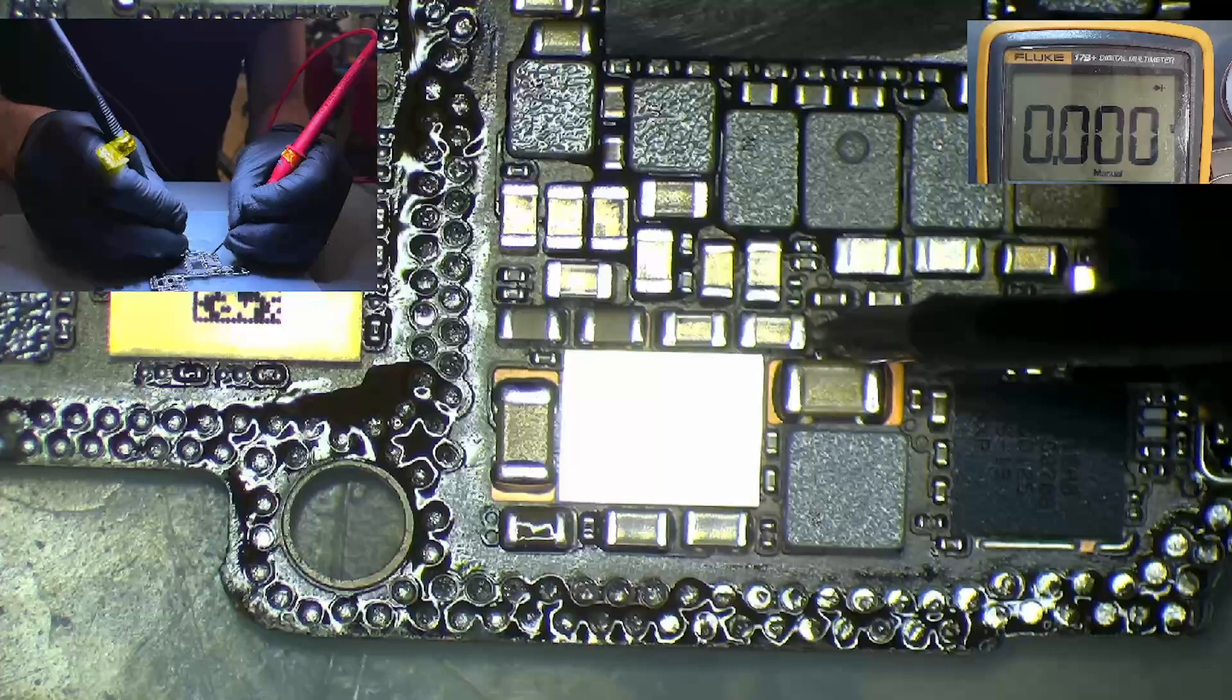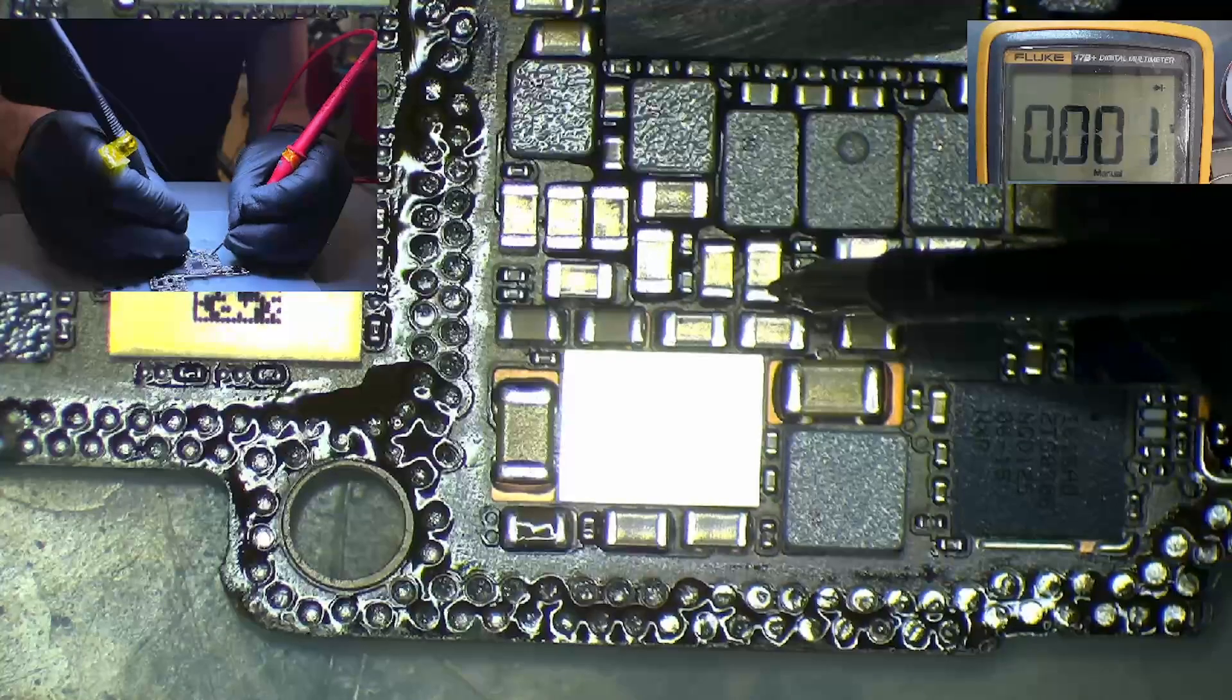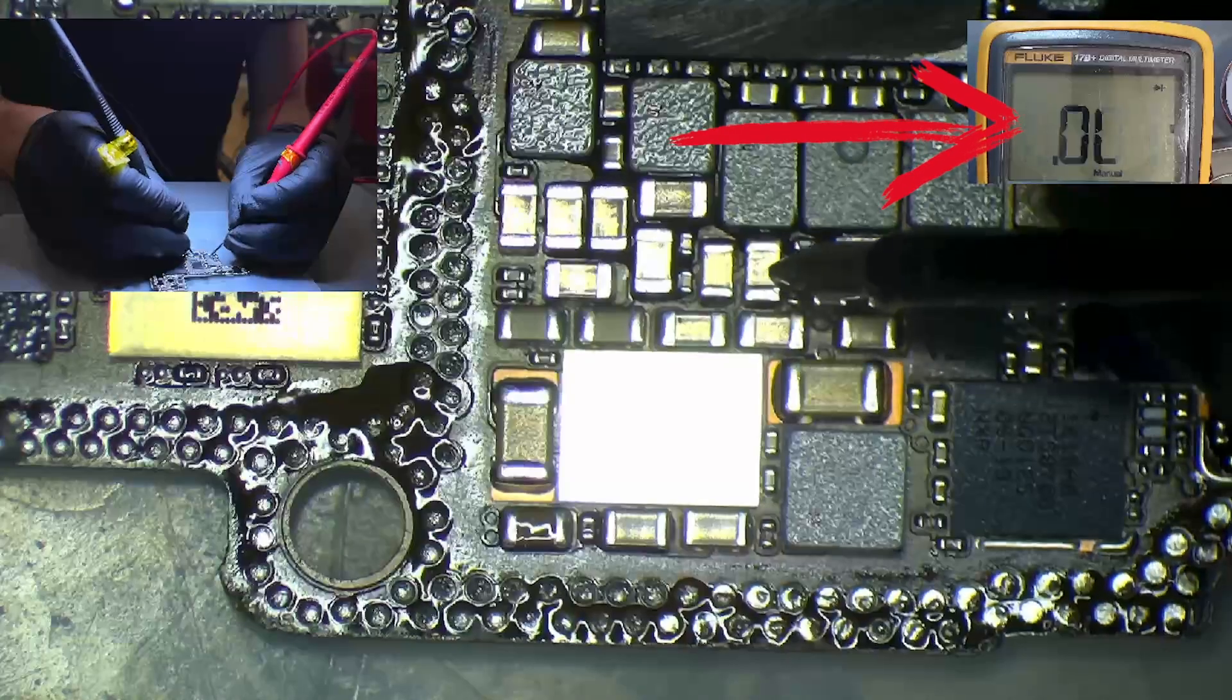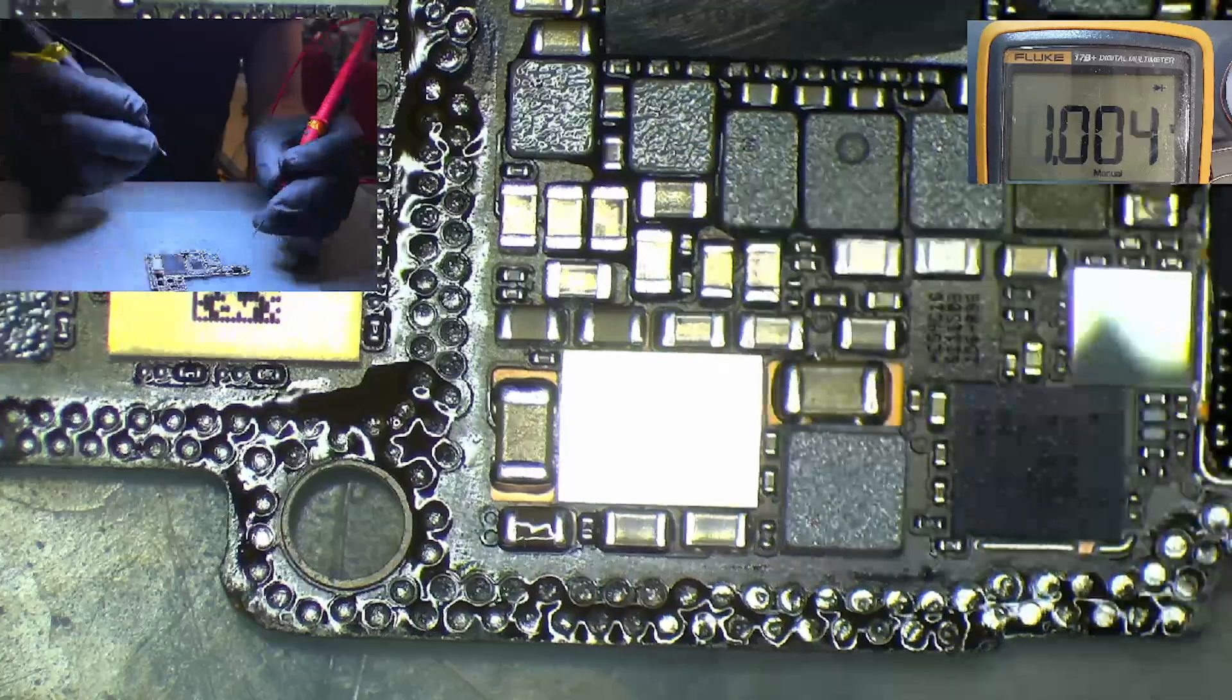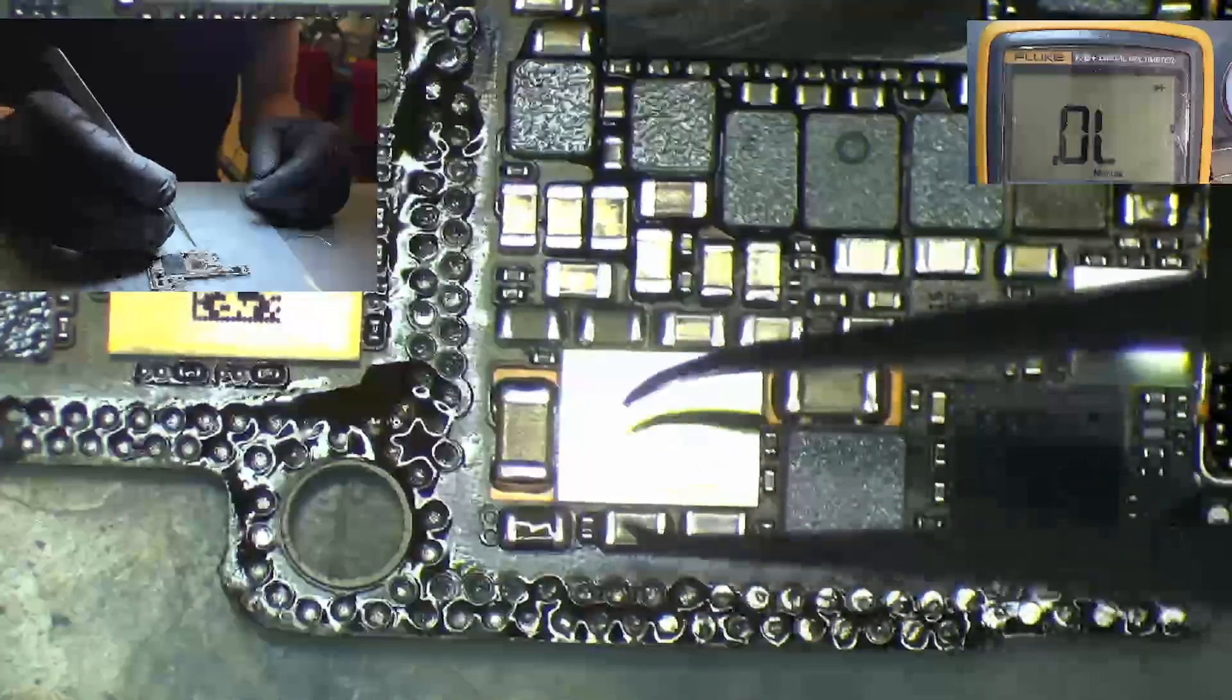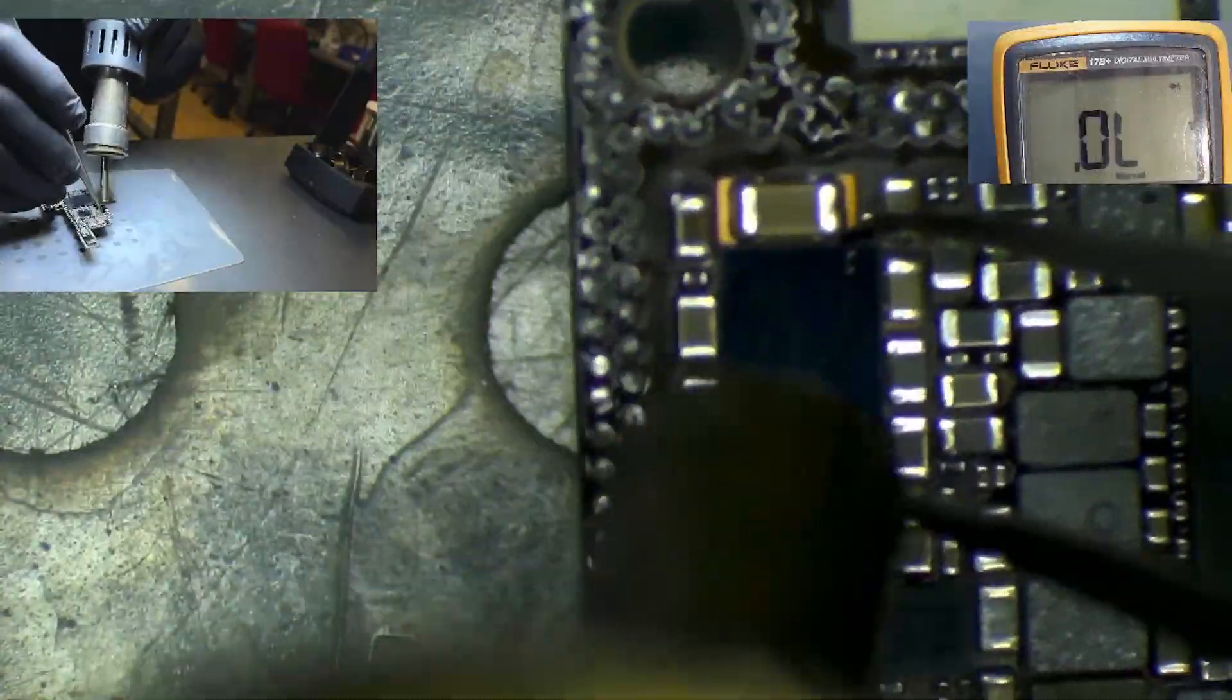Now, since one of the lines of the U9100 is shorted to ground, it is preventing its functionality. For this reason, the screen is not receiving the required voltages to display an image. Now, let's remove U9100 to see if the short is gone.